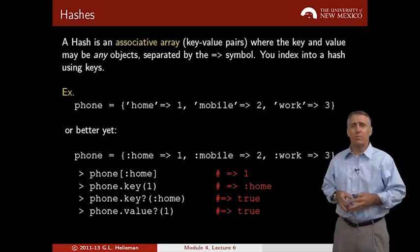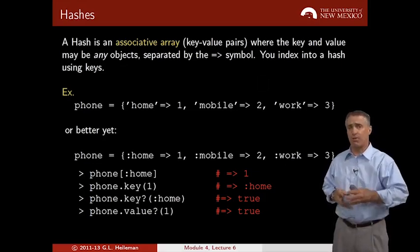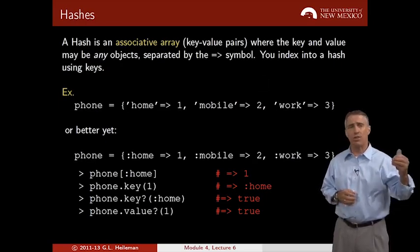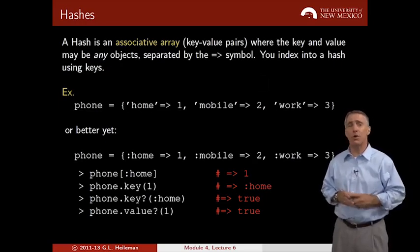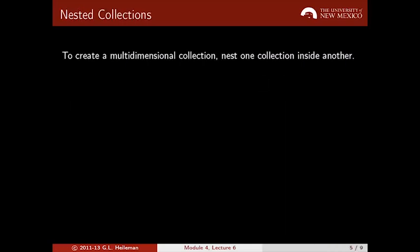As you develop Rails applications, you'll have opportunities to create, for example, the phone one I show you here. If you create a person and you'd like to keep track of their phone numbers and you want to know what type of phone it is, you might create this exact hash.